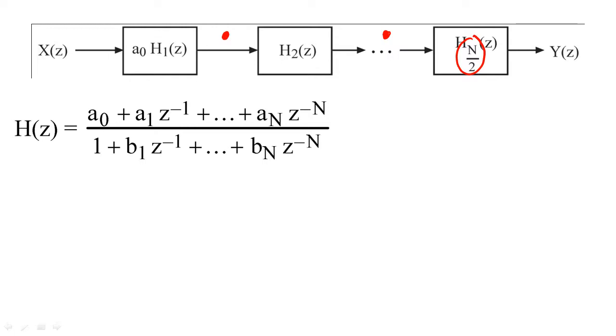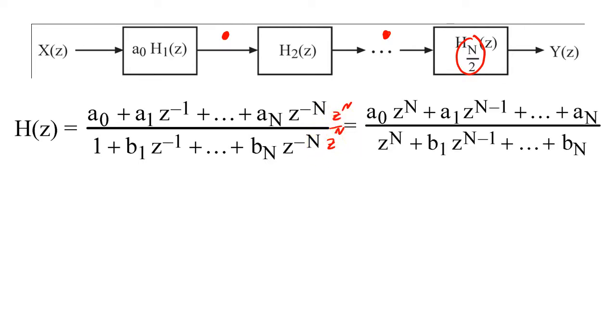To separate the poles and zeros, we must first multiply the top and bottom by z to the n to facilitate factoring. We then factor a sub zero out of the numerator so that all zeros will have the form z minus z sub i.